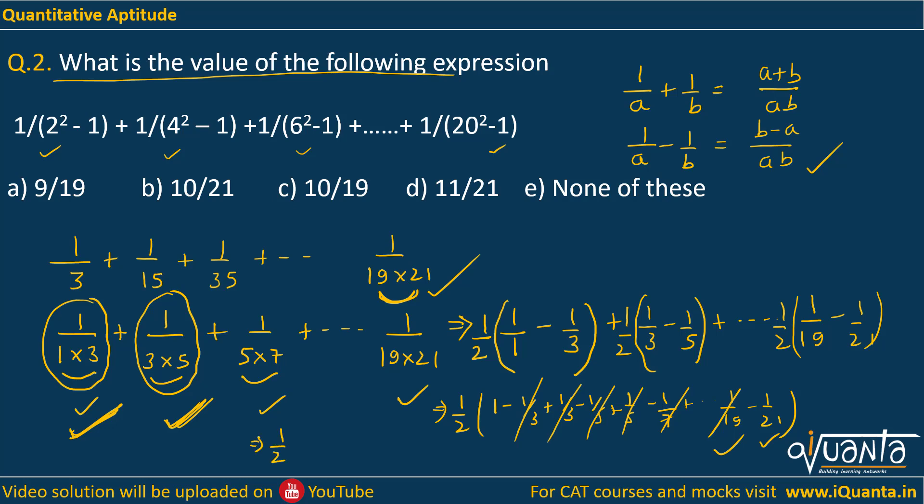So at last I will be remaining with 1/2, this 1 was remaining over here, 1 - 1/21, which gives me half of 20/21. At last I will be getting 10/21 as the final answer. Option B will be the answer over here.